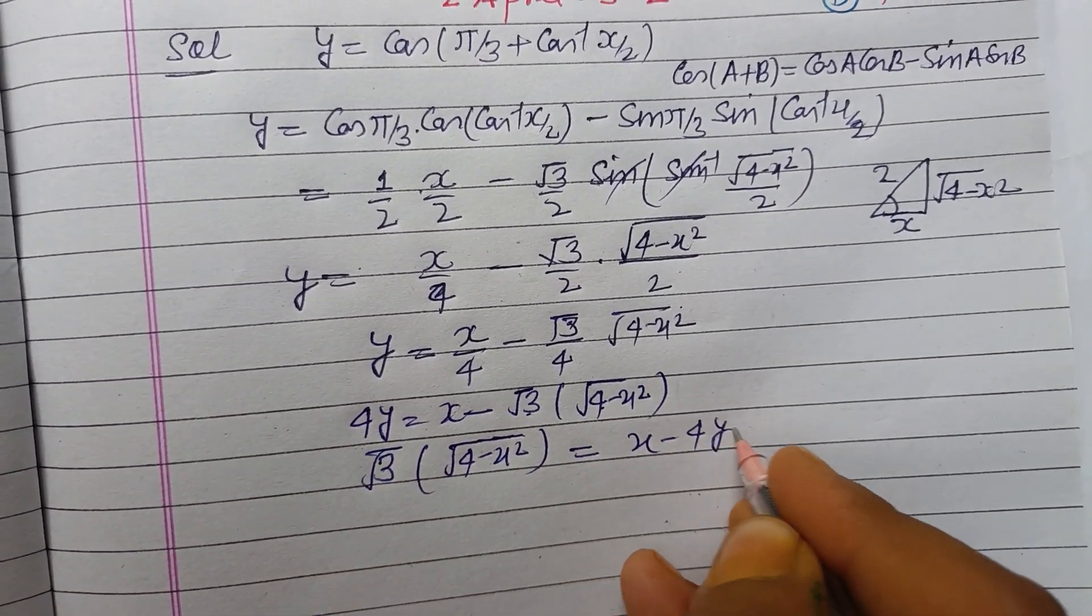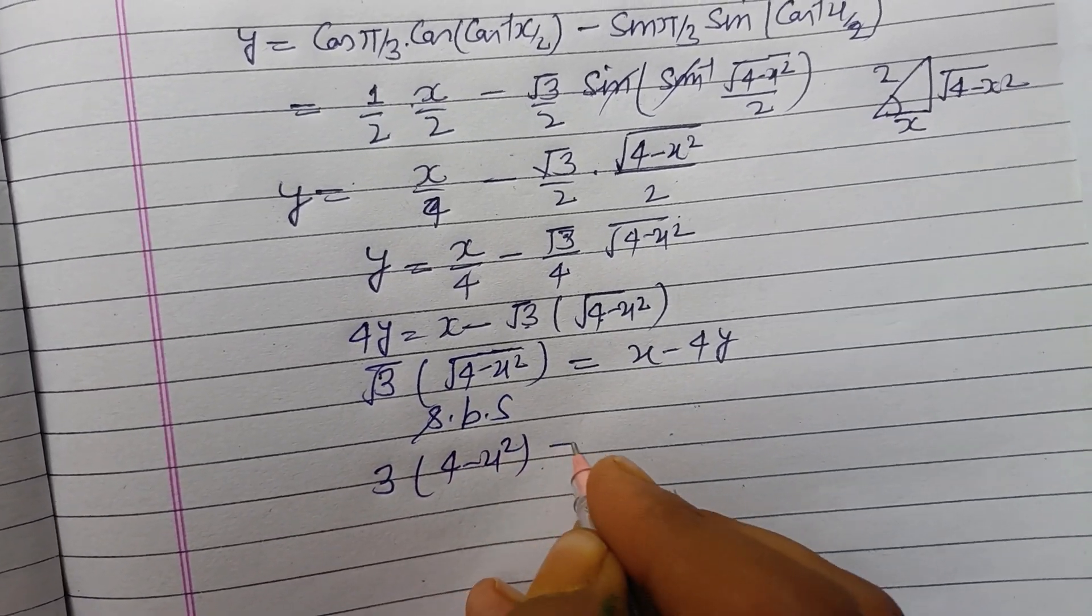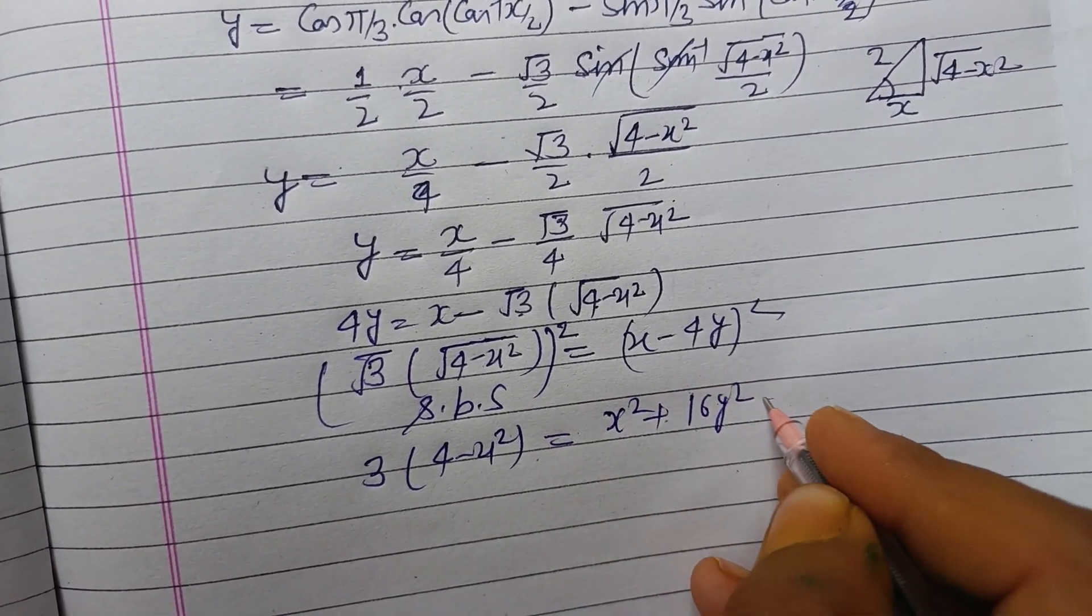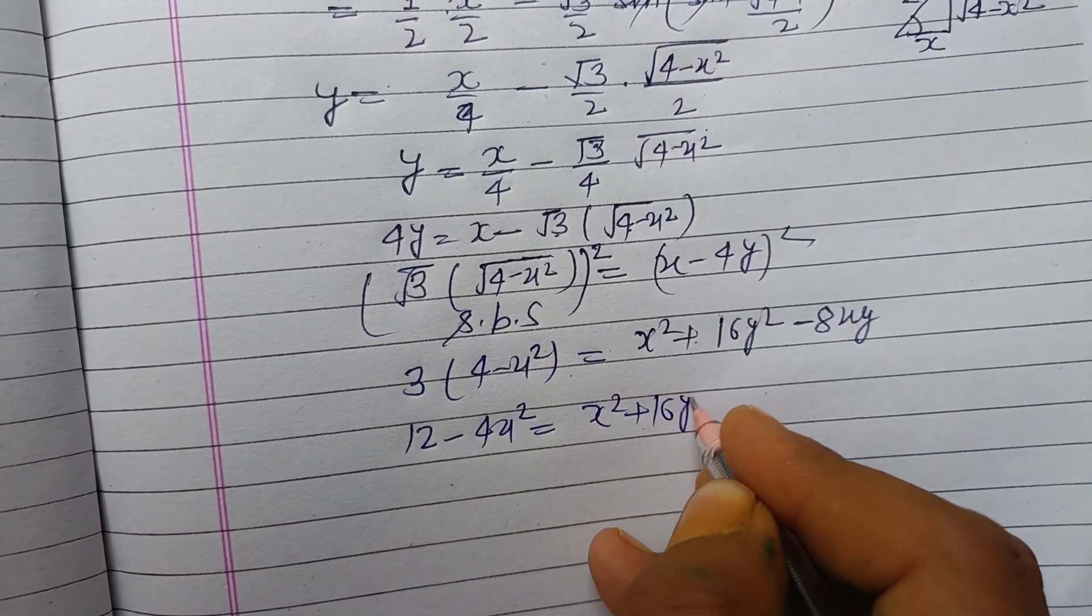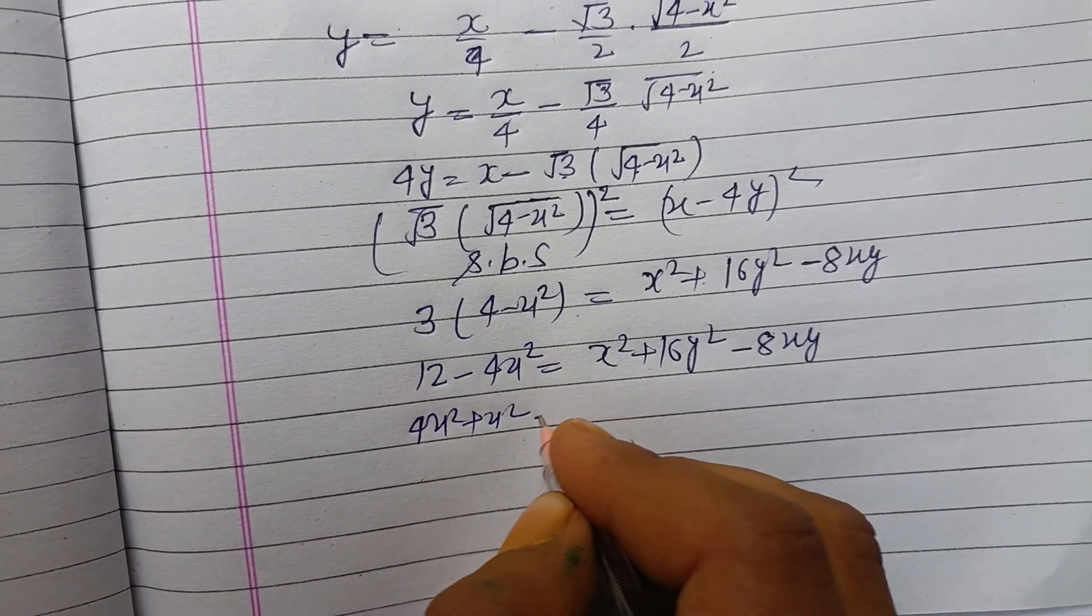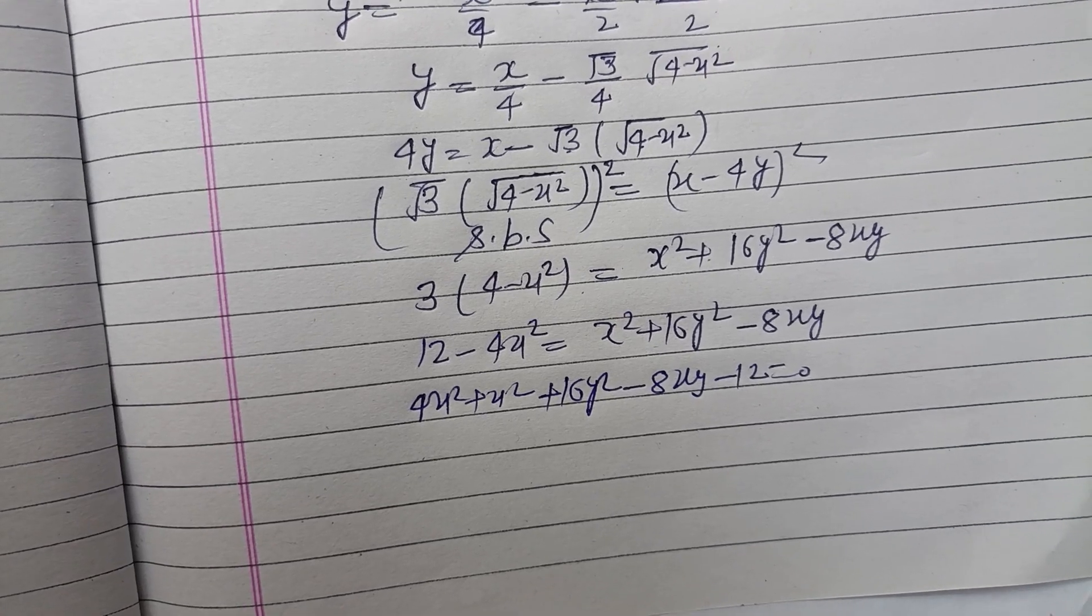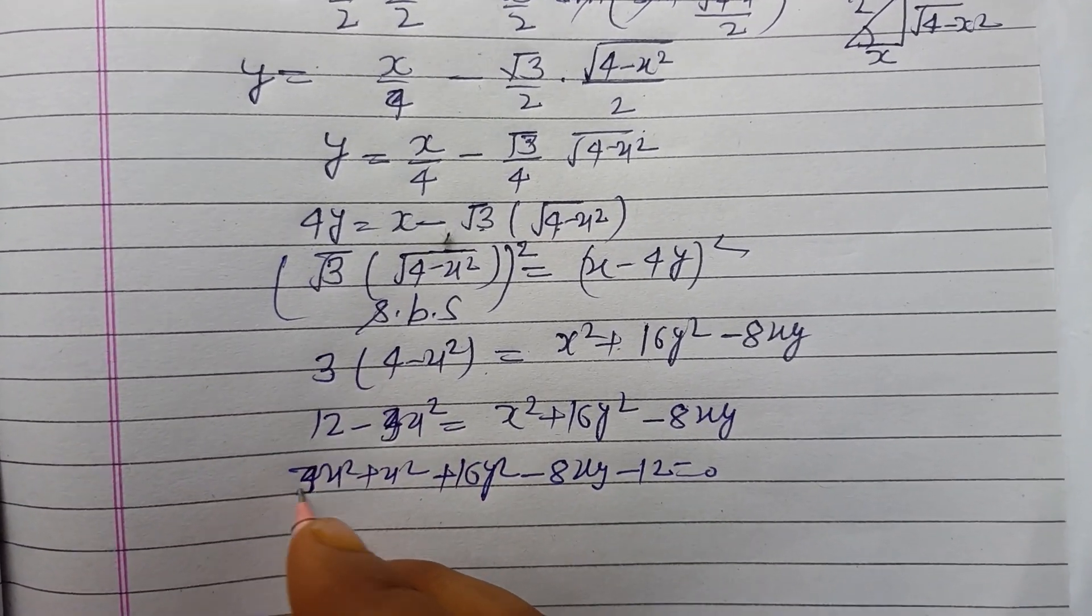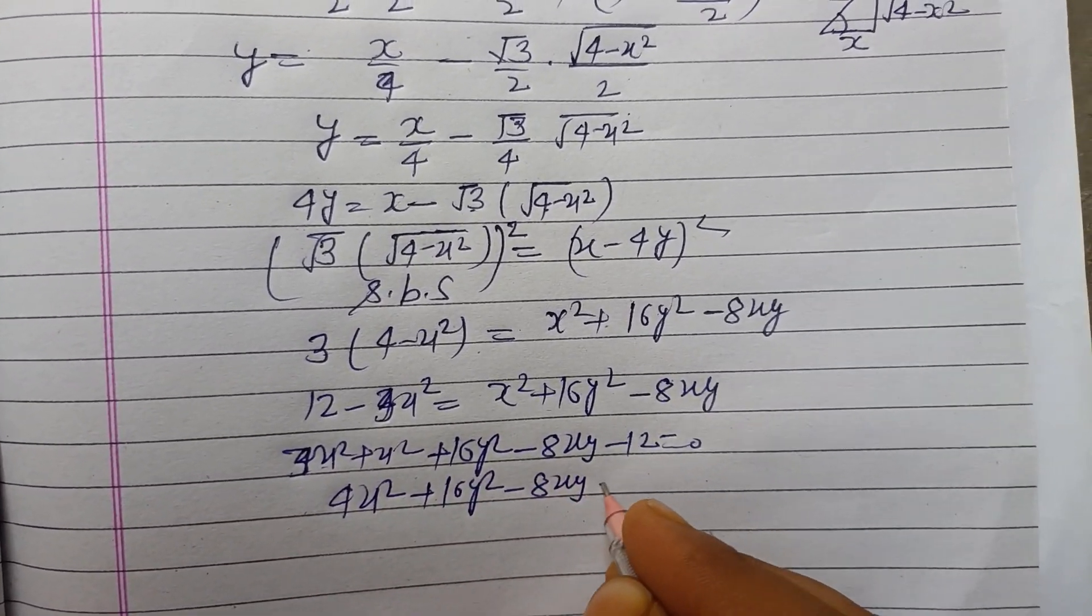Now squaring both sides, so this becomes 3 times (4 - x square), and this is if you square both sides, this is x square plus 16y square minus 8xy. And this is 12 - 4x square equals x square plus 16y square minus 8xy. Taking on one side, 4x square plus x square plus 16y square minus 8xy minus 12 equals 0. Wait, this is 3 here, it is 3 into 4, 3 into x, 3x square. So this becomes 3x square not 4x square. So 3x square plus x square is 4x square plus 16y square minus 8xy minus 12 equals 0.